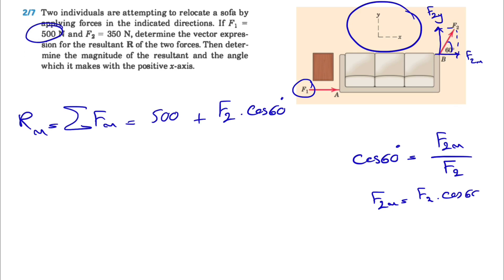Here our F2x will be F2 times cosine of 60 degrees. From here we know that F2 is 350 newtons, and our Rx will be 500 plus 350 times cosine of 60. We know cosine of 60 is 0.5, so 500 plus 175, and that will give us 675 newtons.